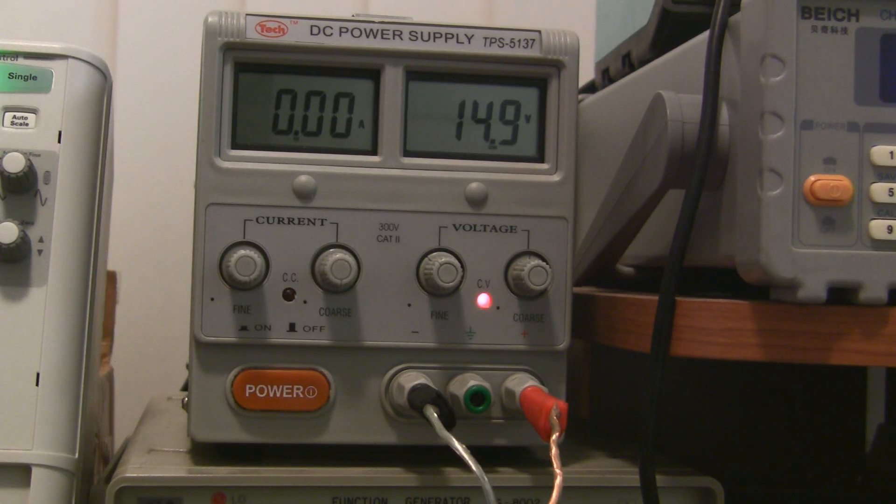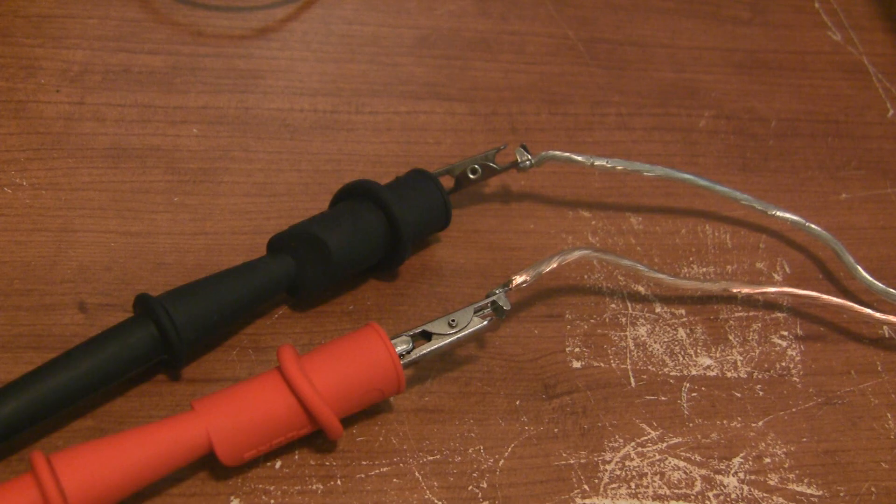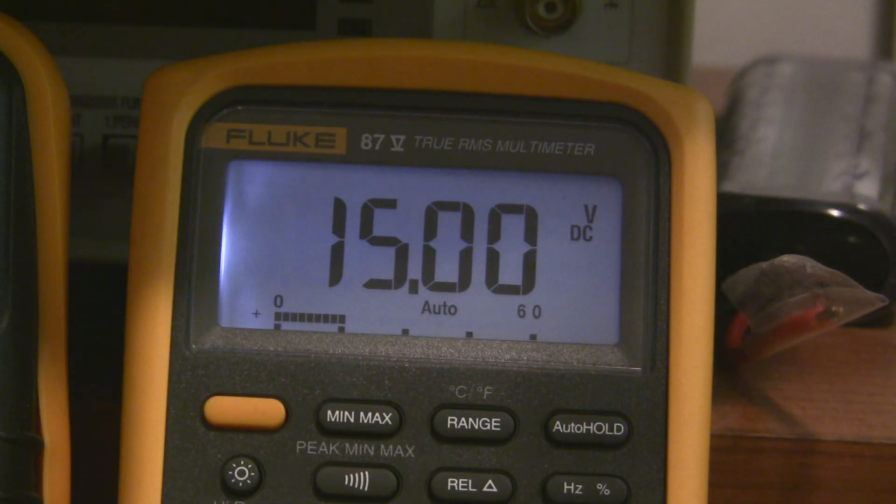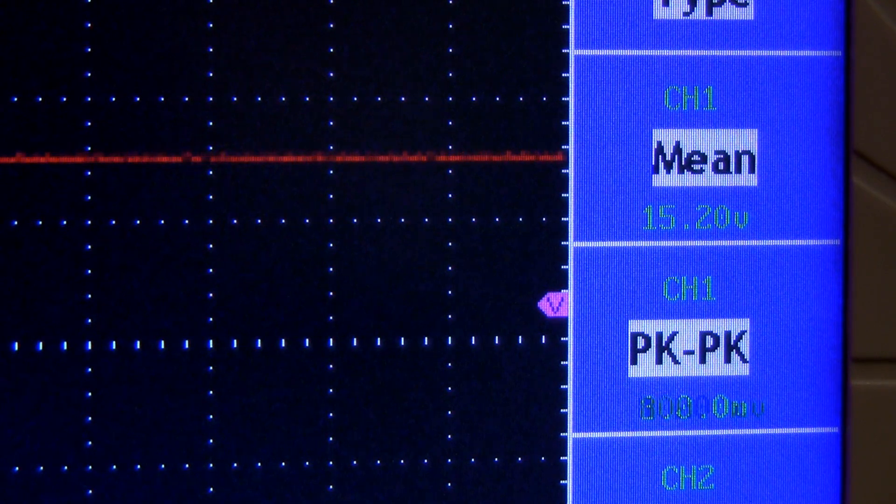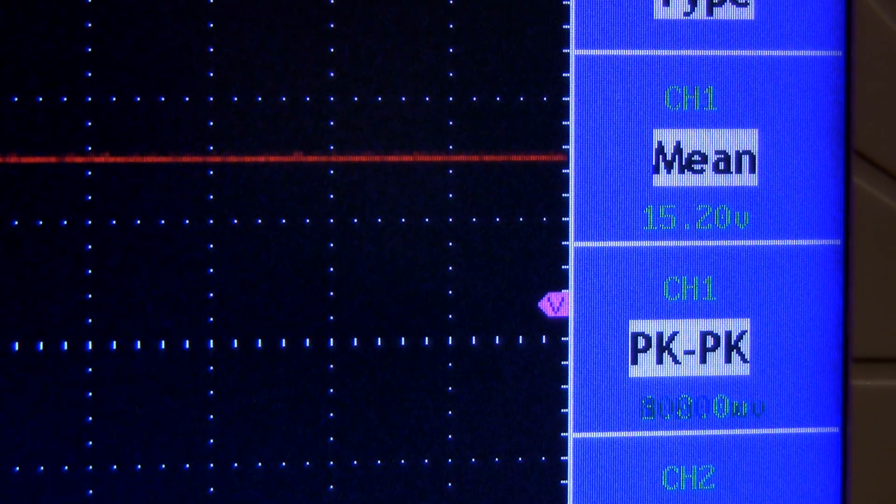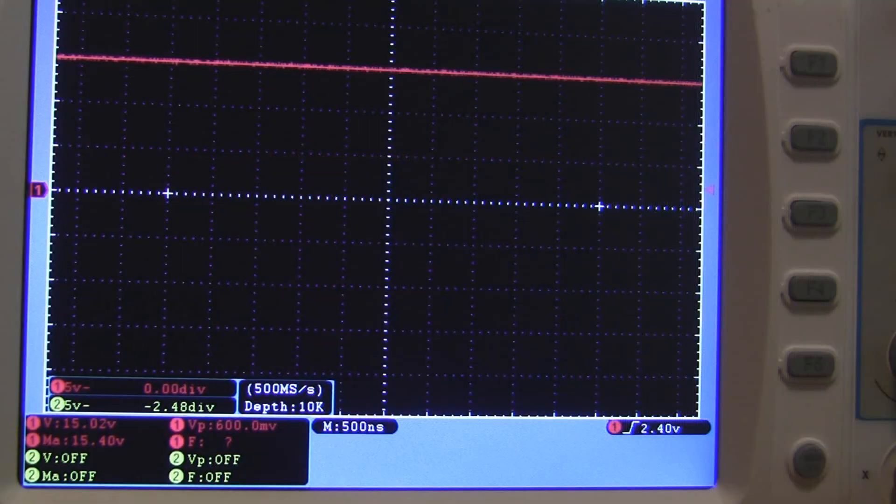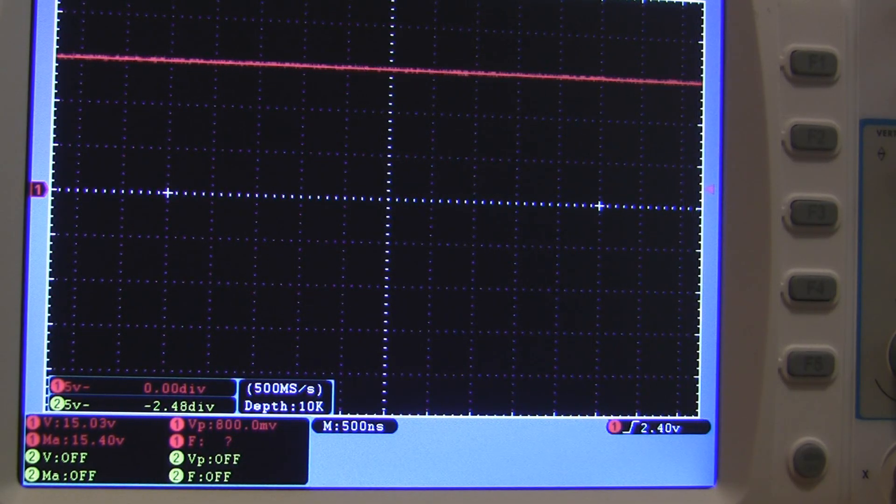Now this brings me to the next topic, are these measurements accurate? I set up a precise 15 volt source for the oscilloscopes to measure. Something I've always noticed about my 5022 is that the measurements always seem to be off by about 0.1 or 0.2 volts. The 6062 seems to be much more accurate, giving me a reading of 15.03 volts.